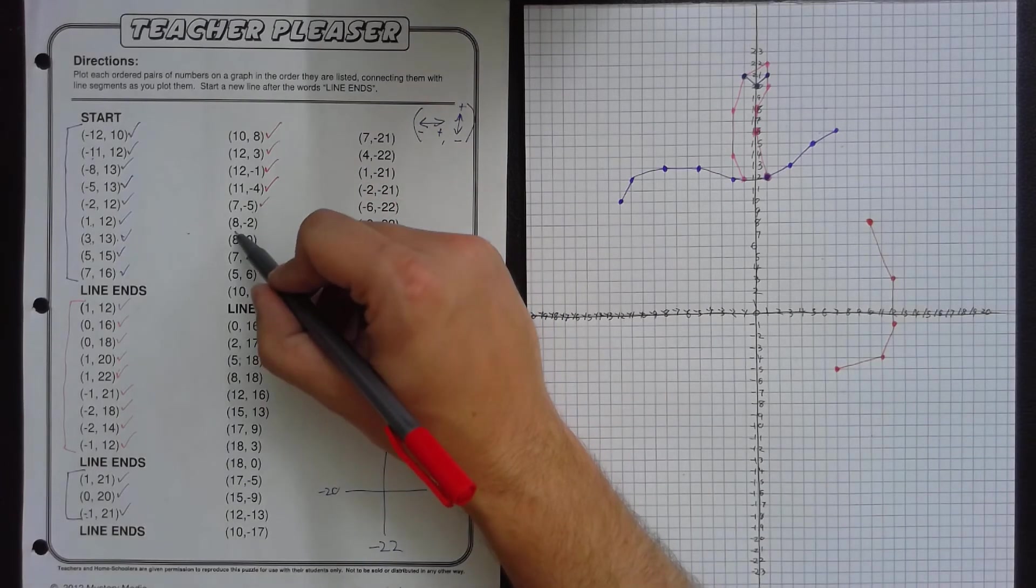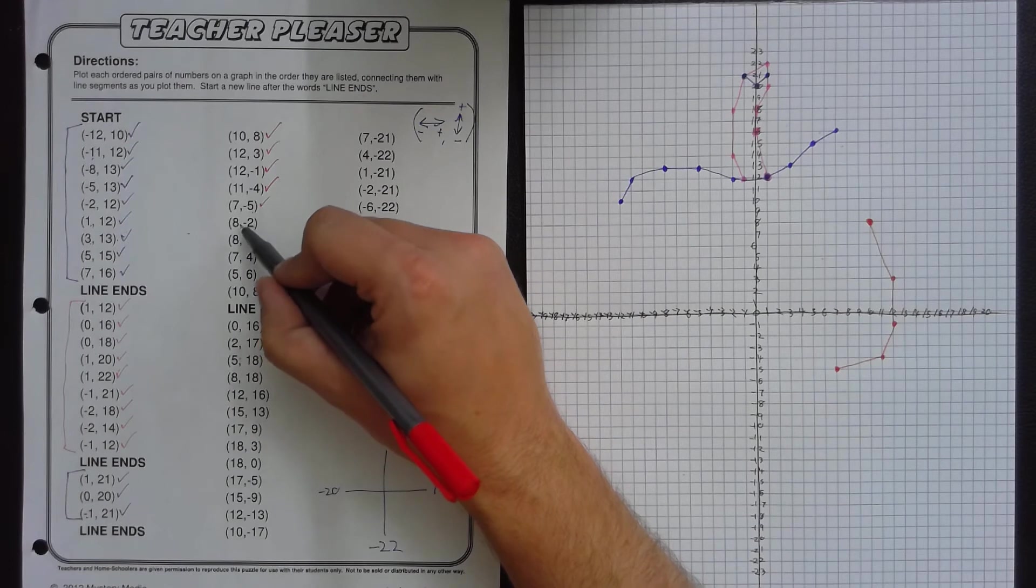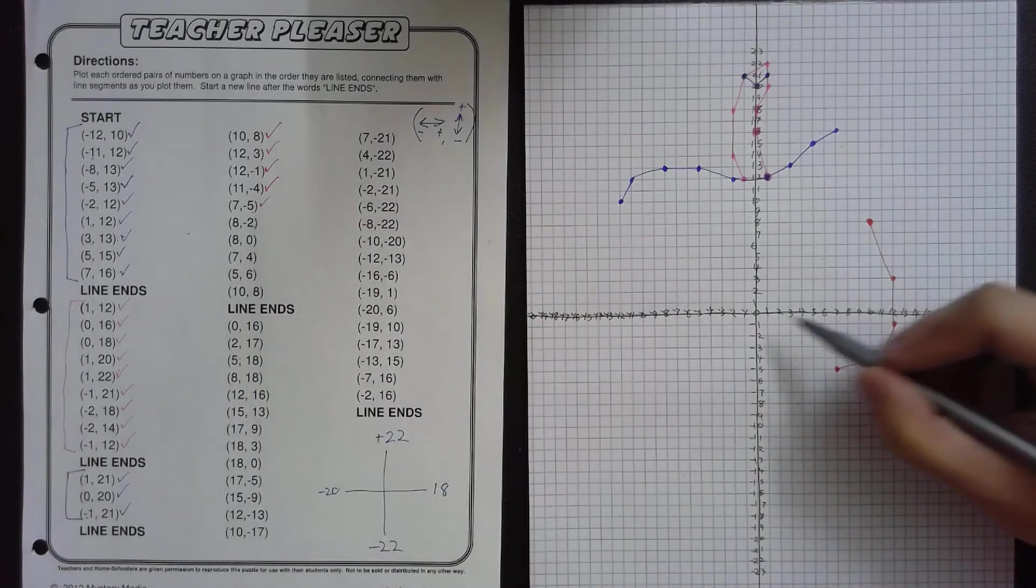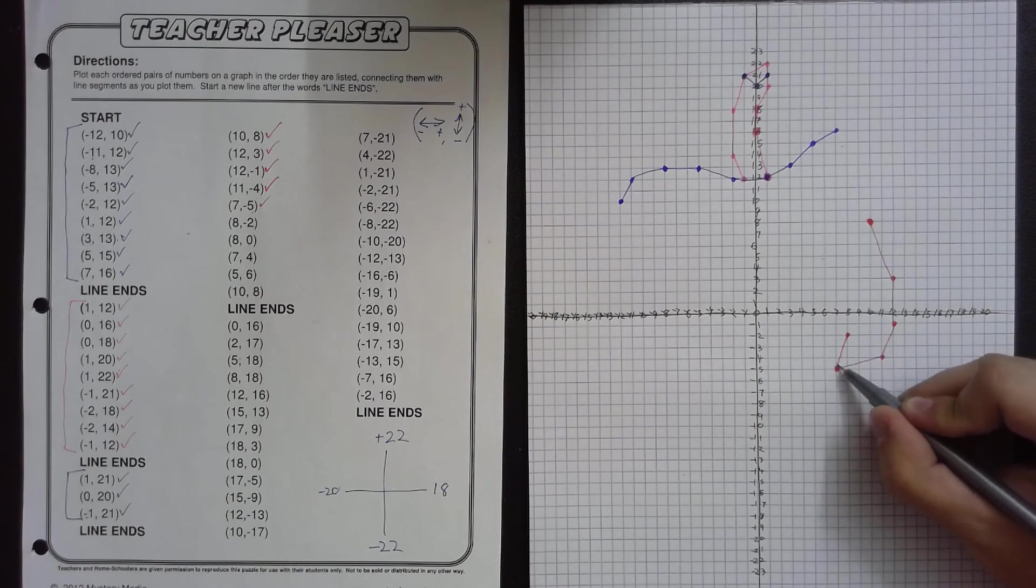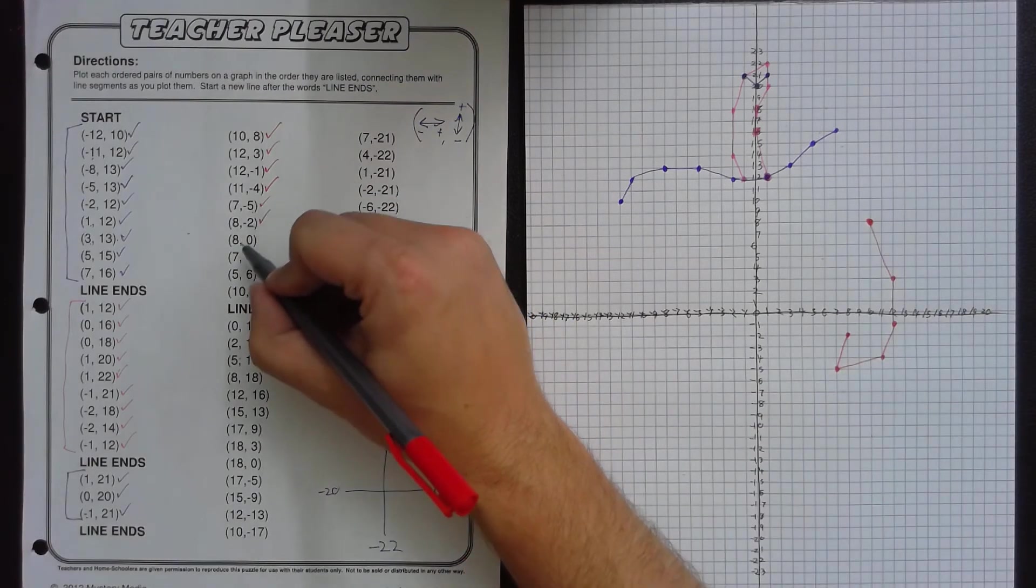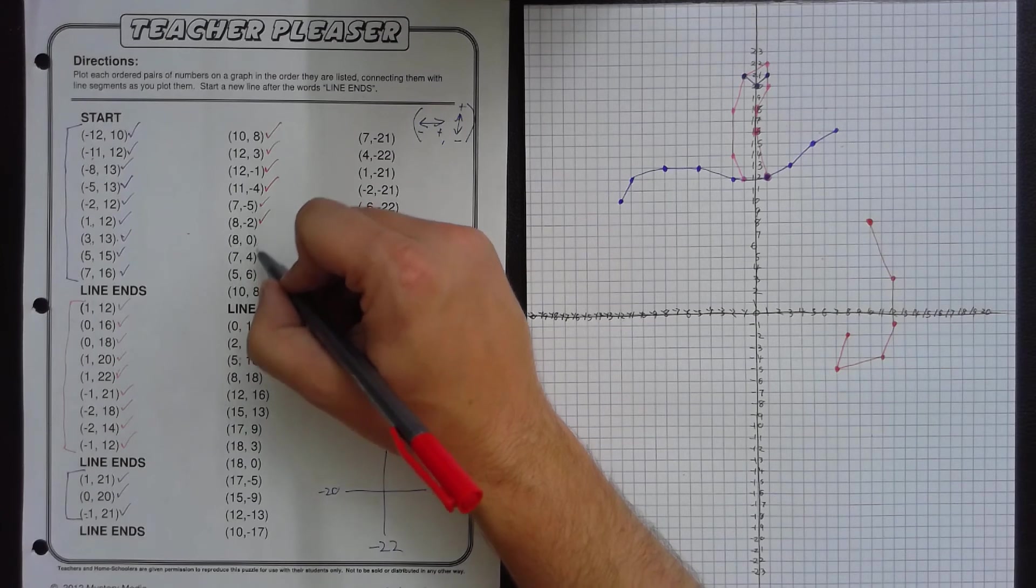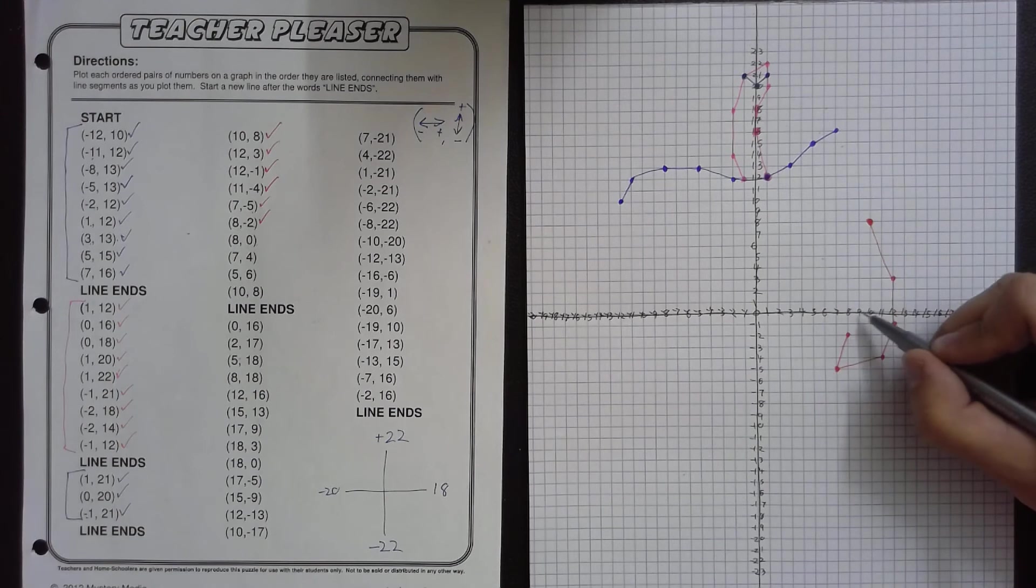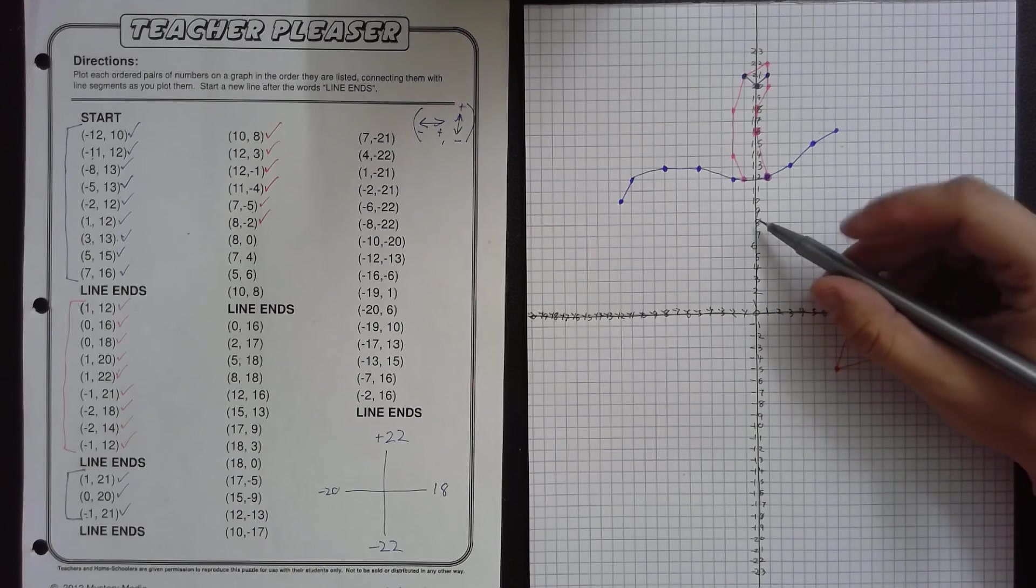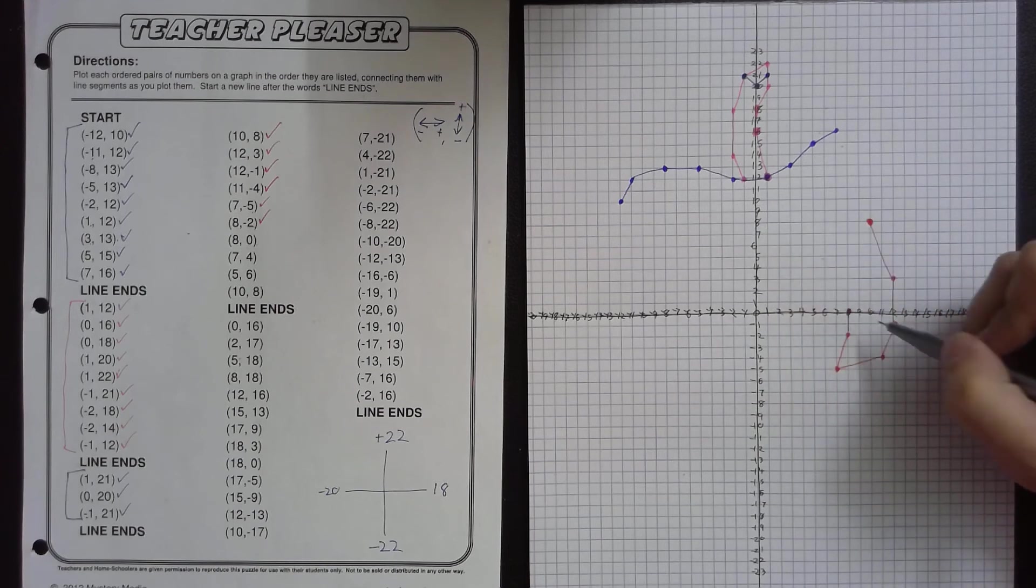Now, we will do 8, negative 2. So 8 to the right and 2 down. Right here. Next is 8, 0. So we will go 8 to the right, but we will not go up or down because this time the second number is 0. So 8 to the right, but not up or down. So at this point, a lot of students accidentally put over here. No, no. Should be really close.